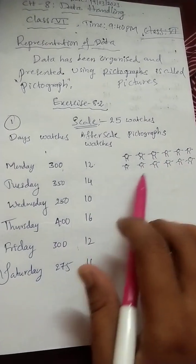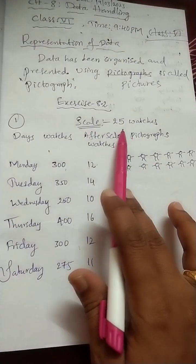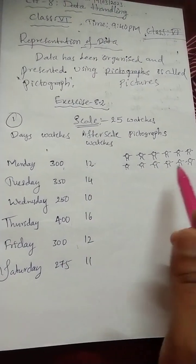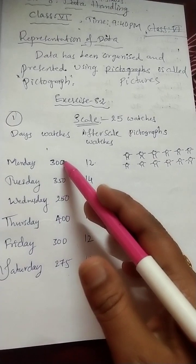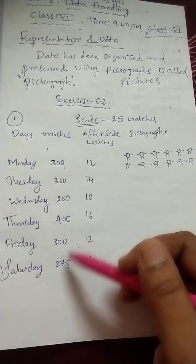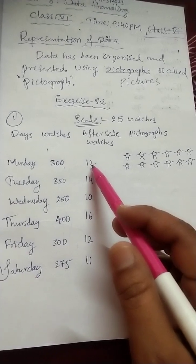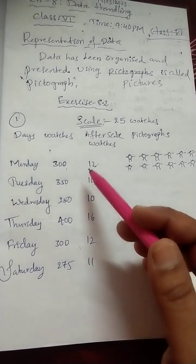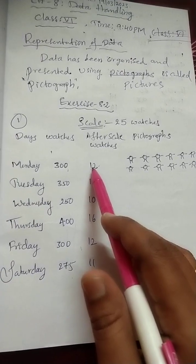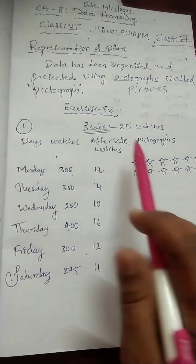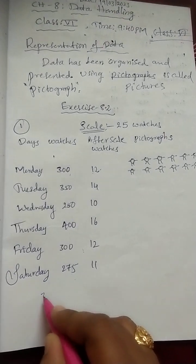Why take a scale of 25 and not another number? If you take a scale of 5, all these numbers are divisible by 5, but the resulting number will not decrease as much — for example, 5 times 60 gives 300, so you'd still get 60 symbols. With 25, the numbers reduce more, making it easier to draw. All the given values are divisible by 25.